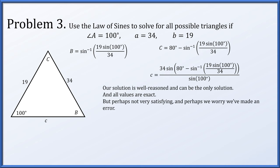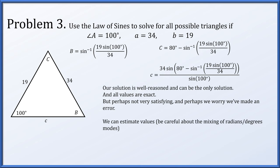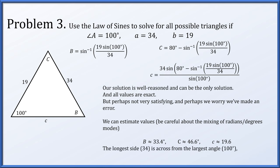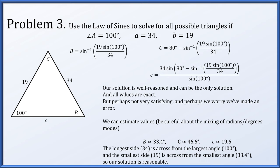All these values are completely exact with no rounding error. But we can estimate: angle B is about 33.4 degrees, angle C is 46.6 degrees, and side length c is about 19.6. The longest side is 34 and that's across from the largest angle of 100 degrees. The smallest side is 19 and that's across from the smallest angle, 33.4 degrees. This is always a way you can check: largest side across from largest angle, smallest side across from smallest angle. If that doesn't work out, you definitely made a mistake.